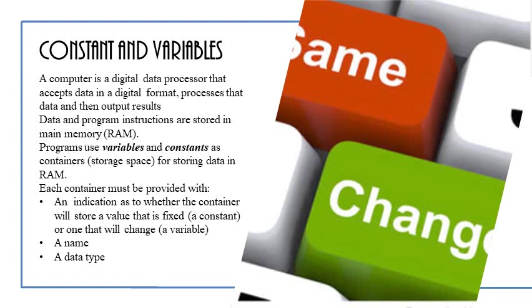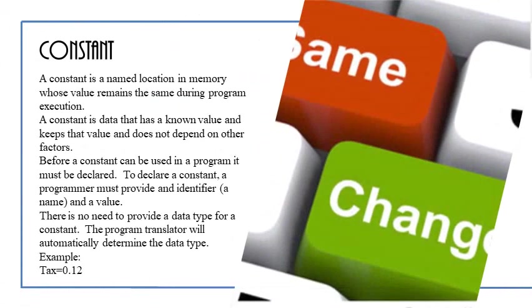Now, whenever you're using these containers, you must provide them with the following information. First, you need to indicate as to whether the container will store a value that will be fixed. And fixed values means values that will not change will be called constants. Now, values that will change are called variables. Sounds like we're going back to math, right? Now, aside from stating whether it's going to be fixed or will change, constant or variable, you also need to provide a name, and you need to provide a data type.